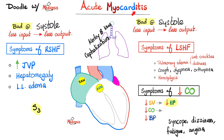Acute myocarditis: I have a heart that cannot perform systole properly, so blood will pile up. The right side of the heart gives me something upstairs, something downstairs, something in the middle. On the left side, I get pulmonary edema with wet crackles, dullness, cough, dyspnea, orthopnea, hemoptysis, Kerley B-lines, and cephalization of the vasculature on chest X-ray. These symptoms mimic congestive heart failure, and I can also develop an S3 gallop rhythm.